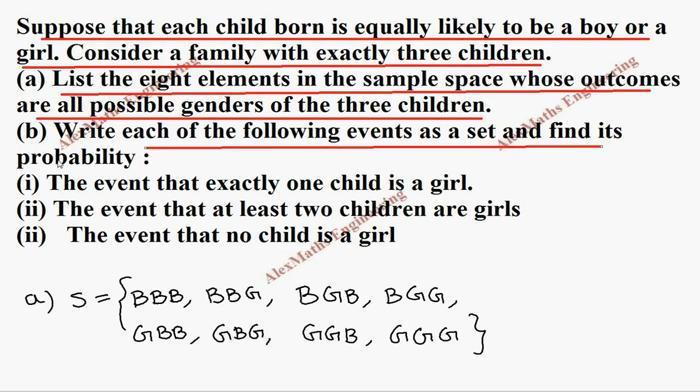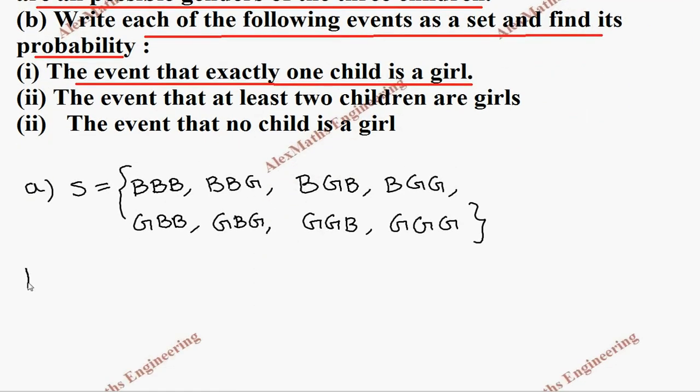In subdivision B we have the first part: the event that exactly one child is a girl. So we are going to write that event first. In B(i), let the event be A where it is exactly one girl. So we have to see the sample space and pick the one which is having exactly one girl.